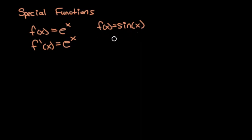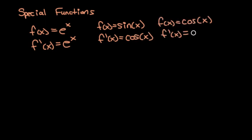If we have f(x) equals sine of x, then f'(x) is going to equal cosine of x. If f(x) equals cosine of x, then f'(x) equals negative sine of x. That negative sign is tricky, so remember it.